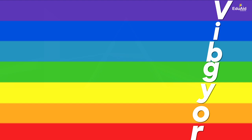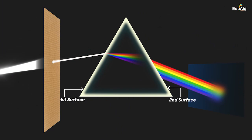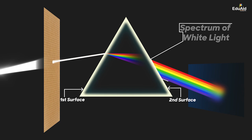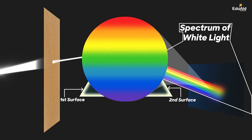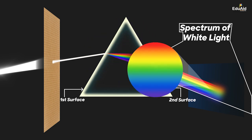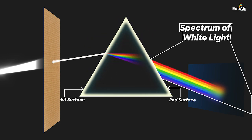This sequence of colours forms a band of colours on the screen, and a band of colours is known as a spectrum. Since the band we have obtained is for white light, it is known as the spectrum of white light. There are seven colours, but you cannot exactly locate the boundary separating any two colours, though you can see that there are seven distinct colours.